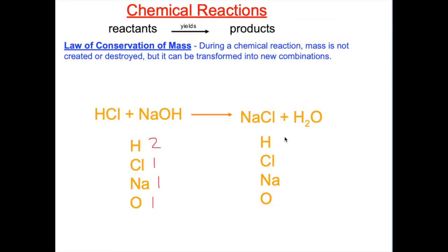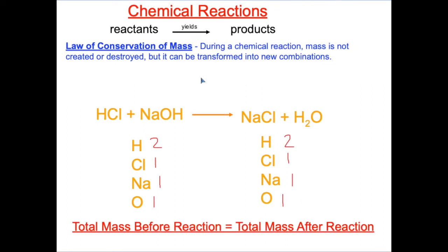On the product side, we have two hydrogens, one chlorine, one sodium, and one oxygen. The total mass during a chemical reaction will not change. The total mass before the reaction is equal to the total mass after the reaction.